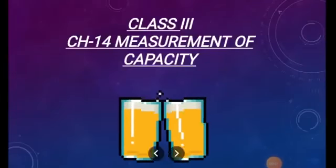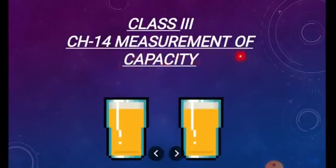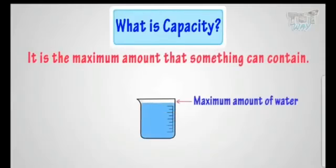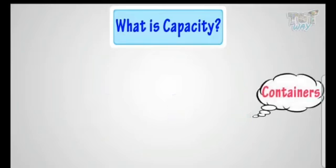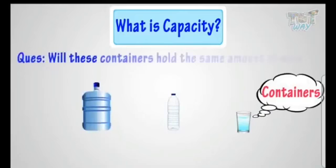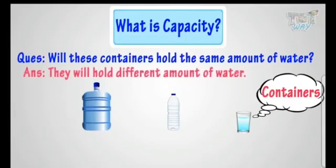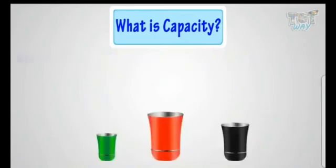Good morning kids. Let's learn about capacity. This is our chapter number 14: Measurement of Capacity. Capacity is the maximum amount that something can contain. Here I have different containers. Can each container hold the same amount of water? No — each of these containers would hold a different amount of water. So we can say that the amount of water each container can hold is their capacity.